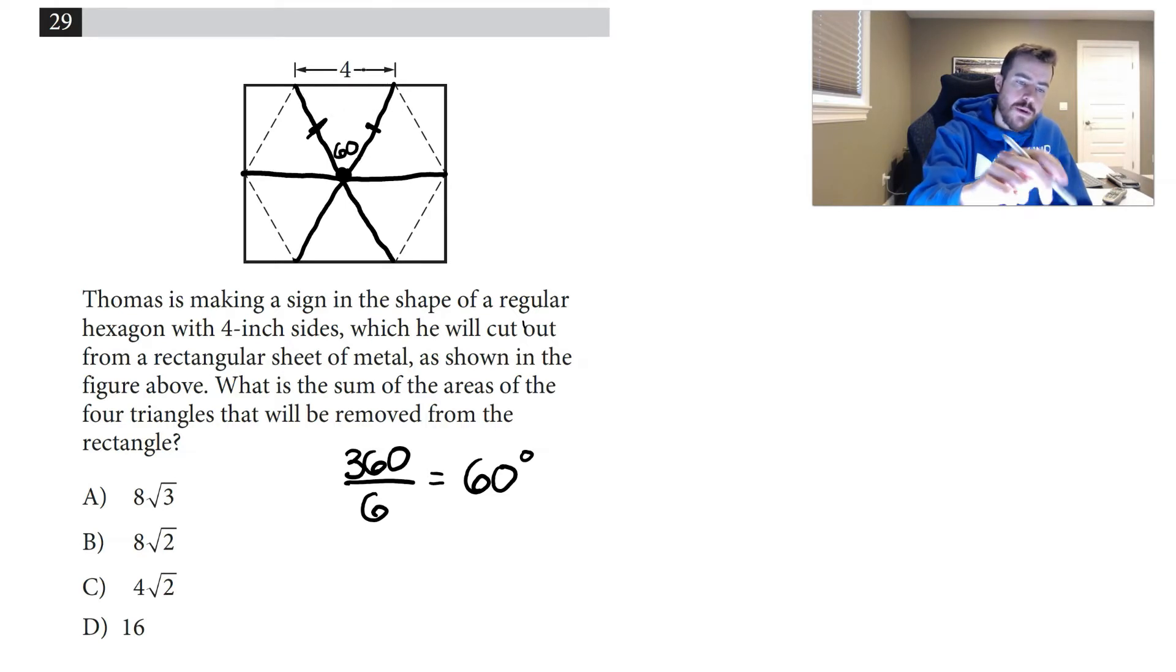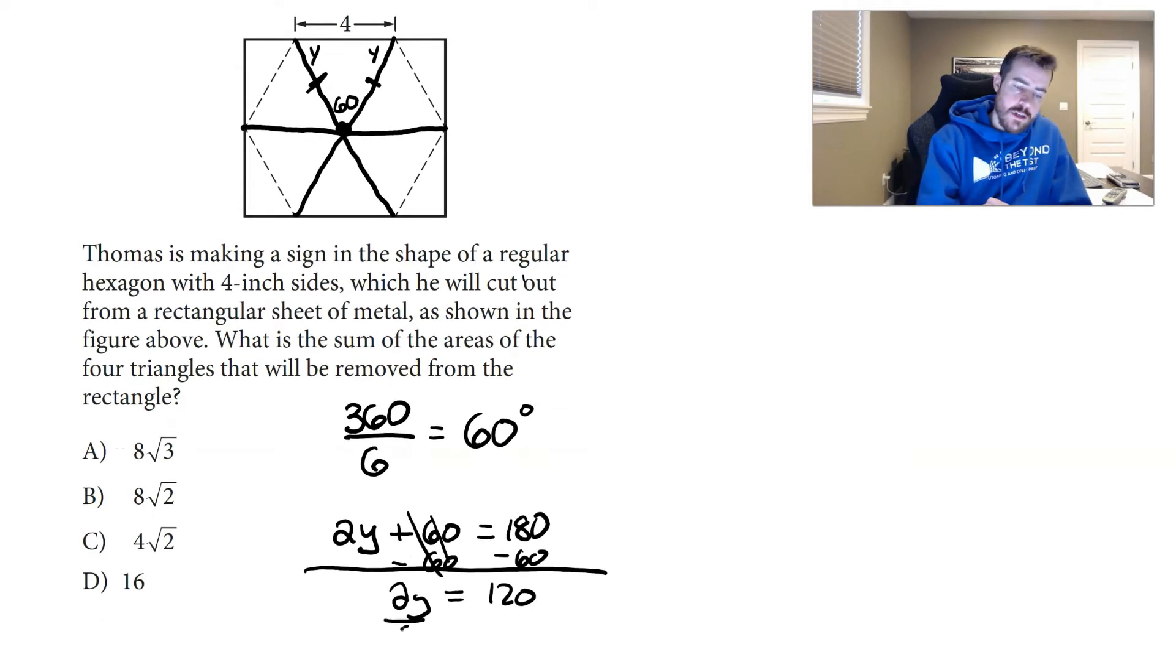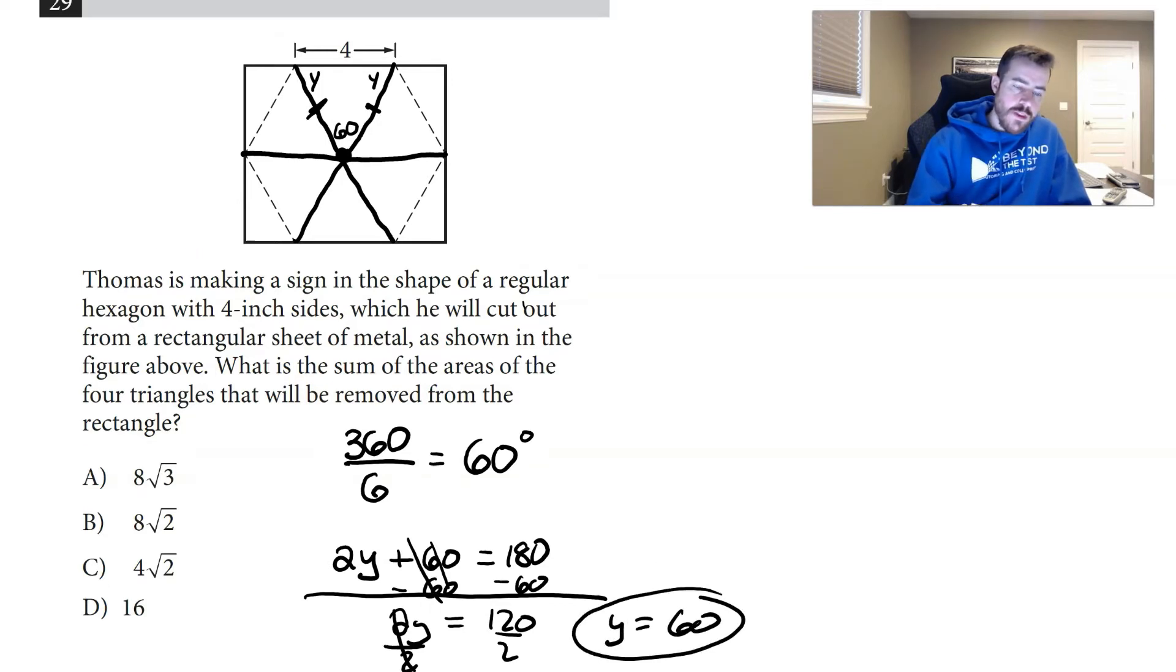I should show you how I came up with that. If I label these both Y, well then I know 2Y plus 60—in a triangle we know that's 180 degrees. So if I minus off 60 here, we get 2Y equals 120, and then simply divide by 2 and you'll get that Y is equal to 60 as well.